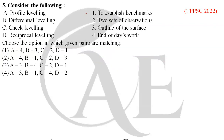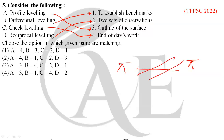Next question: match the following leveling types. Profile leveling is used to find the outline of the surface. Differential leveling is used to establish benchmarks. Check leveling is carried out at the end of the day's work. Reciprocal leveling requires two sets of observations from each side — used when there is a valley or river between points. Therefore, A→3, B→1, C→4, D→2, making option 4 the correct answer.